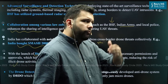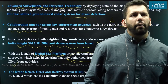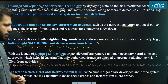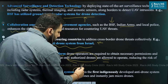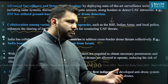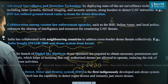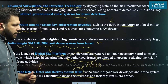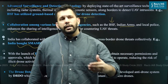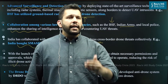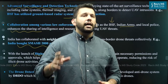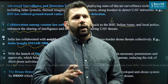The last method indigenously developed by the DRDO is the Drone Detect, Deter and Destroy system, known as D4S, developed indigenously by DRDO. This is an anti-drone system with the capability to detect rogue drones and instantly jam micro drones as well. With this, we can understand that India has taken a variety of steps which collectively contribute to ensuring security against threats coming from the use of unmanned aerial vehicles.